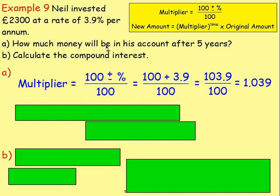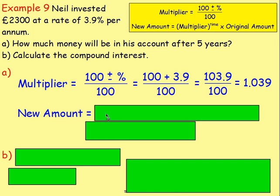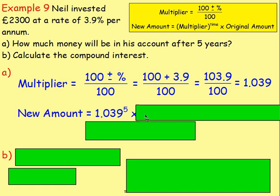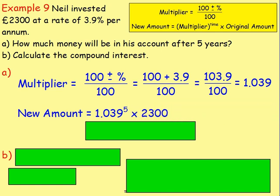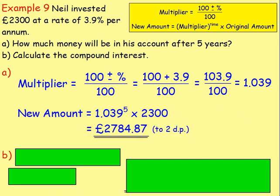We are wanting to work out how much money is going to be in Neil's account, assuming he just abandons it for five years. The amount in the account will be the multiplier 1.039 to the power of five, and you multiply that by the £2,300 that Neil put into the account. Work that out in the calculator and you get £2,784.87.